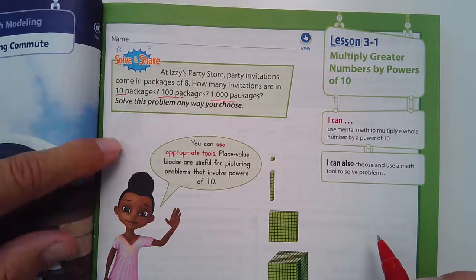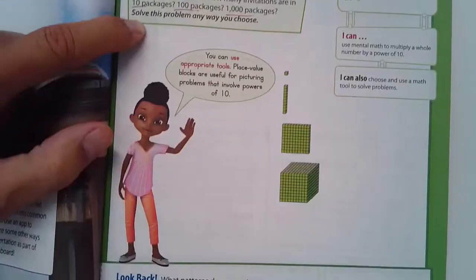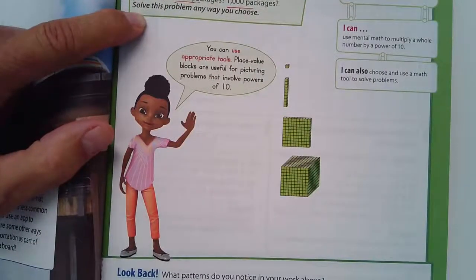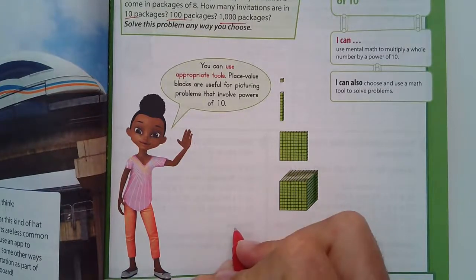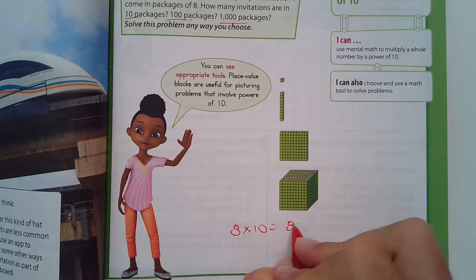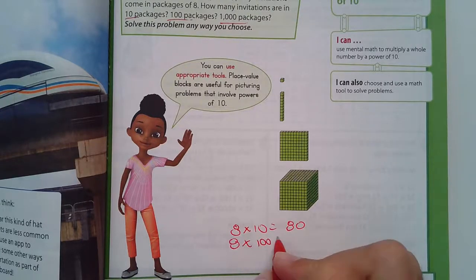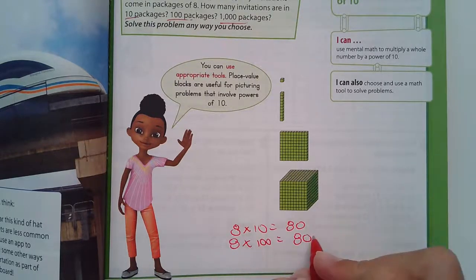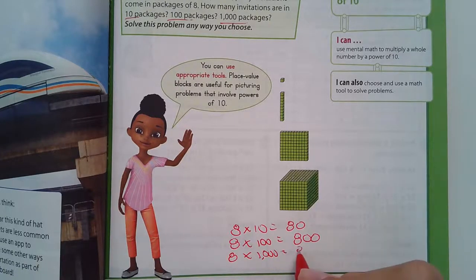Party invitations come in packages of eight. So eight times ten — I'm just going to write this down here. Eight times ten, you know that's 80. What's eight times 100? That's eight hundred. And eight times a thousand — that is eight thousand.